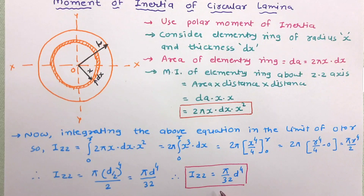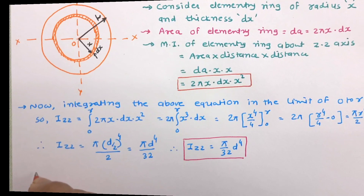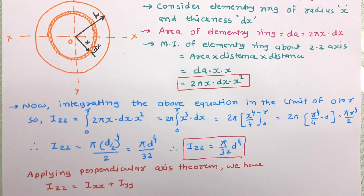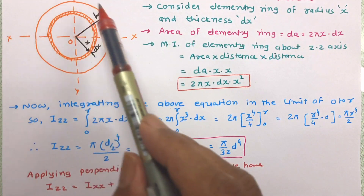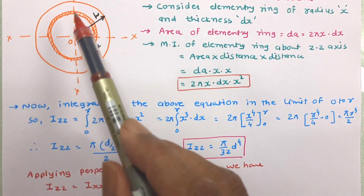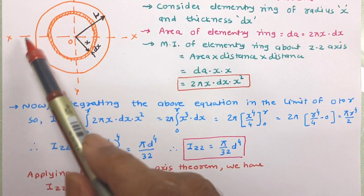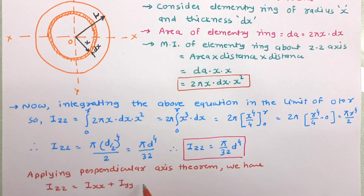Now let us work out Ixx and Iyy using the perpendicular axis theorem. According to the perpendicular axis theorem, Izz = Ixx + Iyy. Since this circular section is symmetrical about all axes in the plane of the lamina, Ixx and Iyy will be equal.